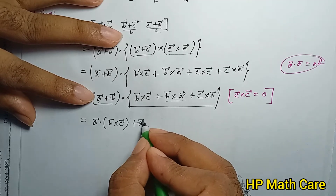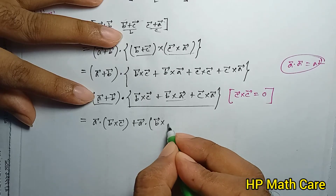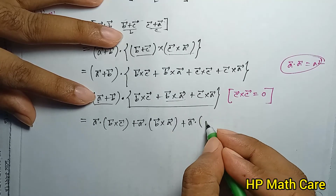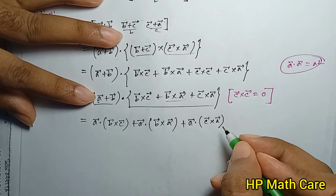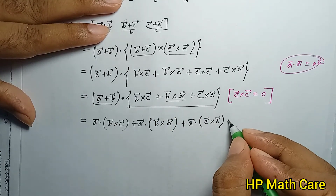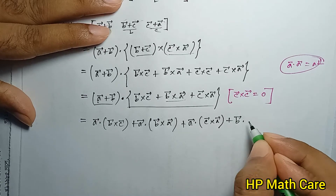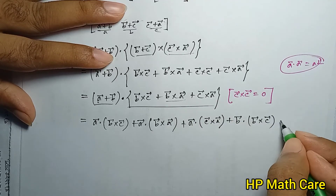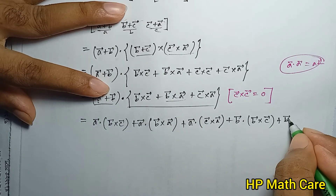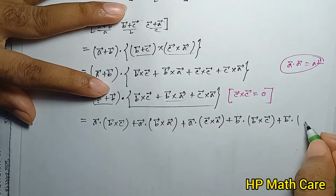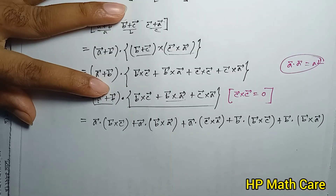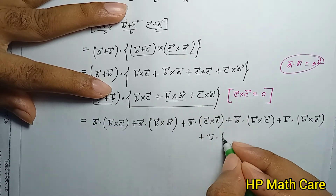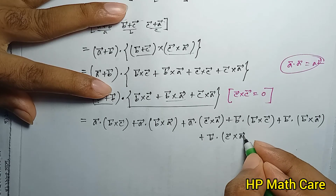Further expanding: a dot (b cross a) plus a dot (c cross a) plus a dot (b cross c), plus b dot (b cross a) plus b dot (c cross a). We identify which terms vanish and which survive.